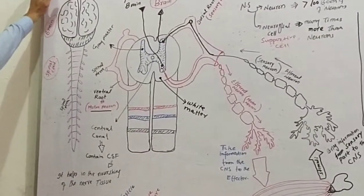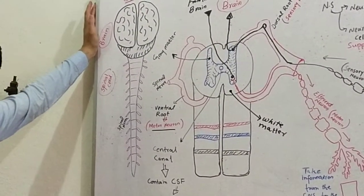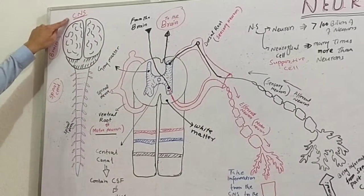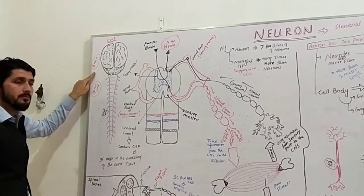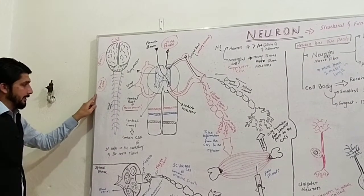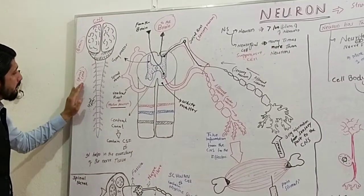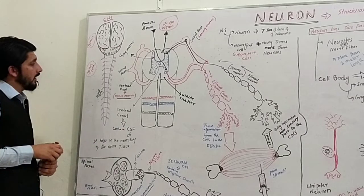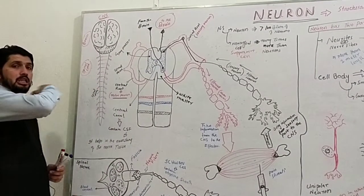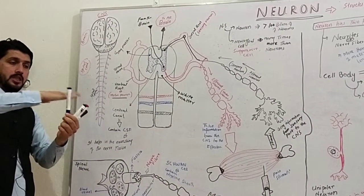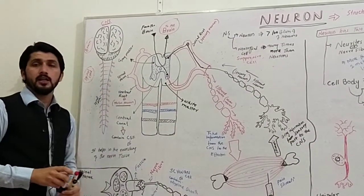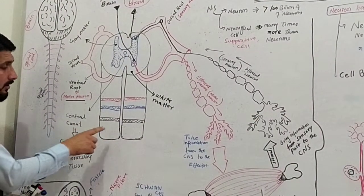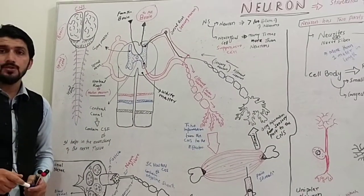The central nervous system includes the brain and the spinal cord. The spinal cord gives rise to spinal nerves. The spinal cord is covered by a membrane called the meninges, and the spinal cord has three meningeal layers.